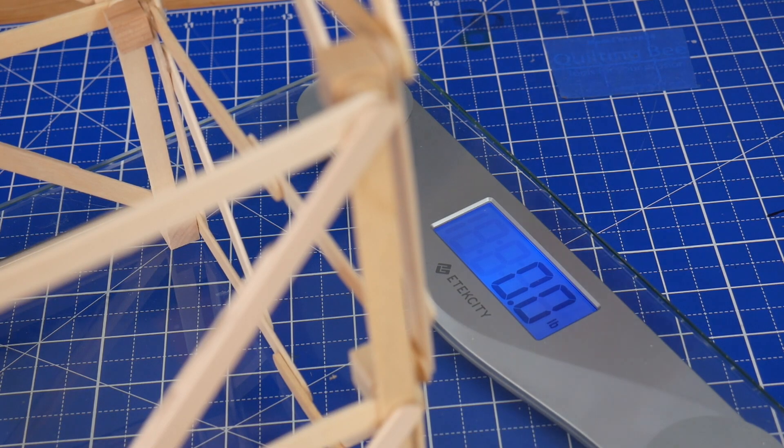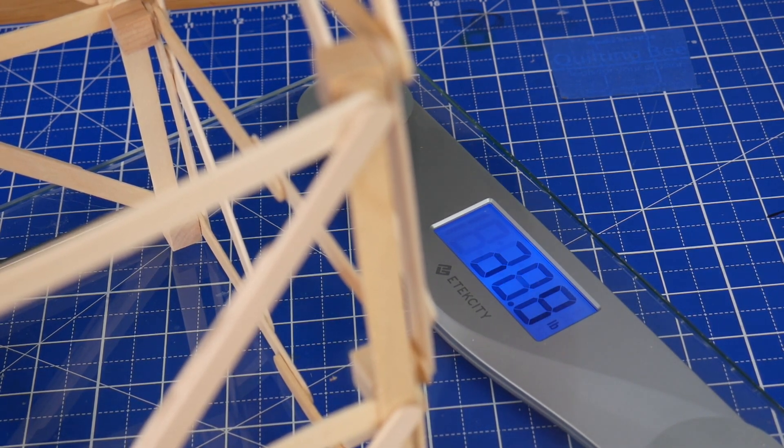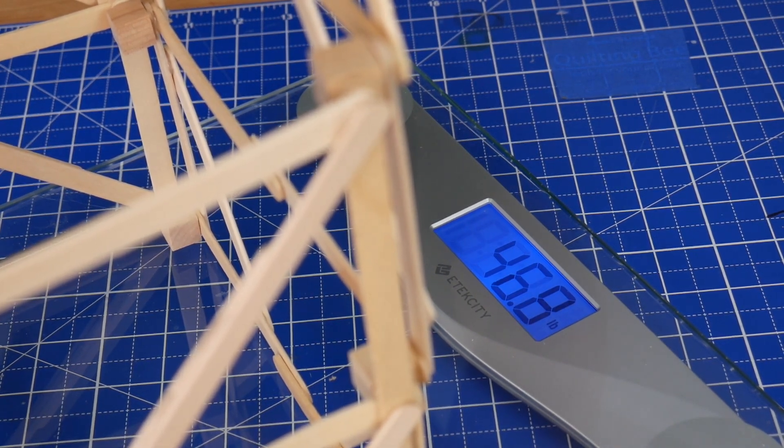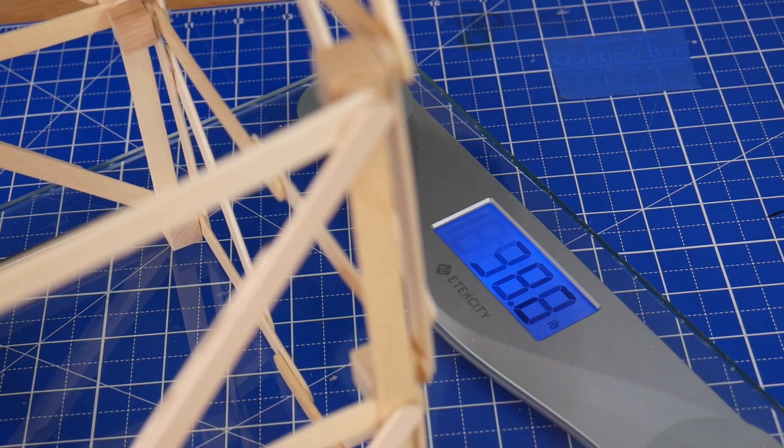And if you want to be able to measure your results more accurately, you can first put the tower on top of a bathroom scale and then start adding weight or even just pushing down with your hands.